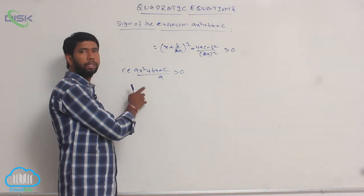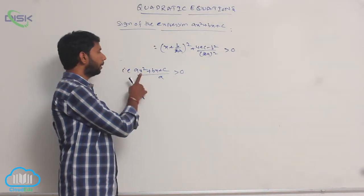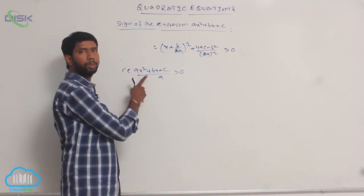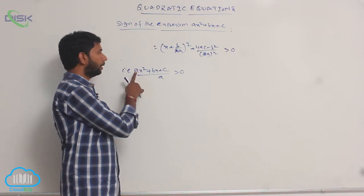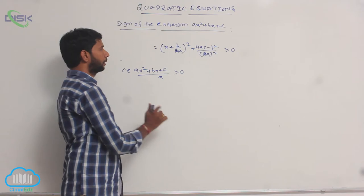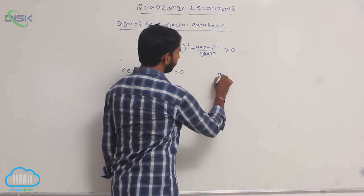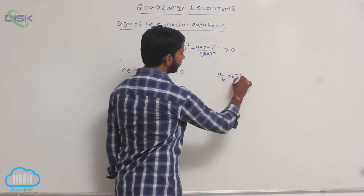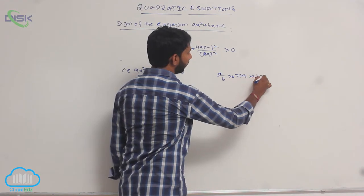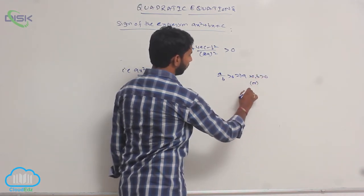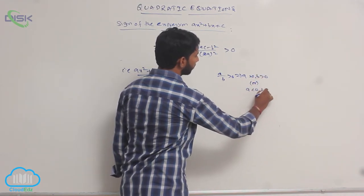If the fraction A/B is positive, it means A is positive and B is positive, or A is negative and B is negative. That is, A/B positive implies A > 0 and B > 0, or A < 0 and B < 0.